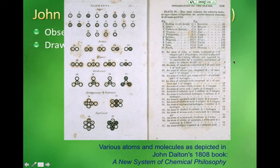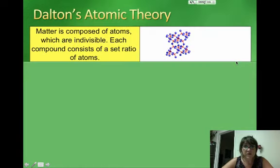So here's what his notebook looked like. This is an excerpt from his 1808 book where he describes a new system of chemical philosophy, and we want to look at the four basic ideas in his book.